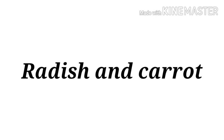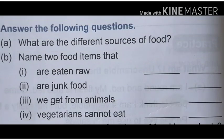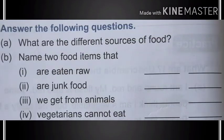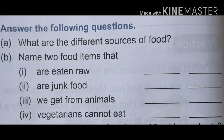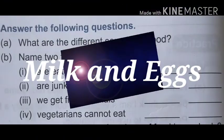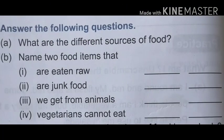The answer for raw foods is radish and carrot — radish का मतलब है मूली और carrot का मतलब है गाजर, इन दोनों को हम कच्चा खाते हैं. Next: name two junk foods — chips and burger. Next: name two food items we get from animals — milk and eggs. And vegetarians cannot eat: meat and fish.